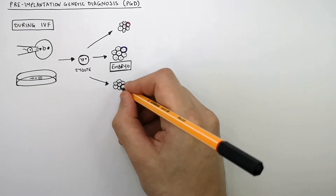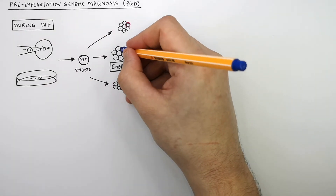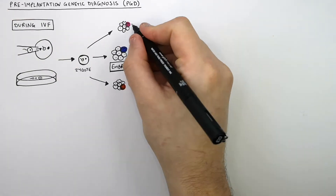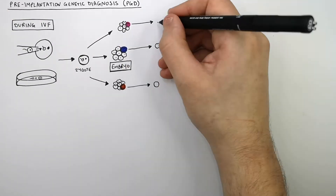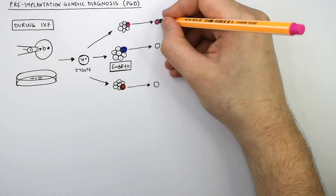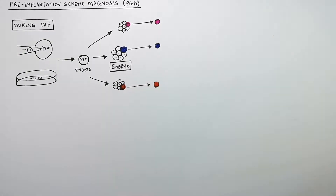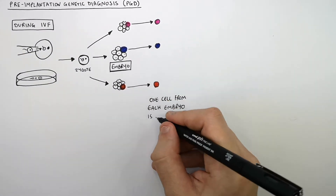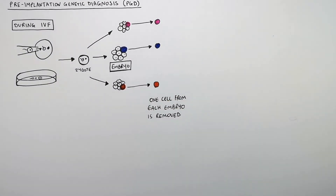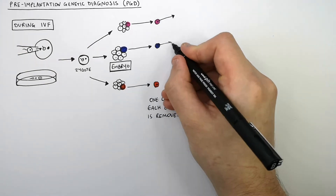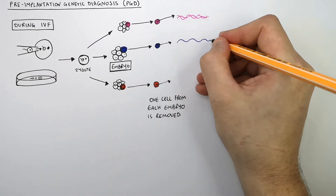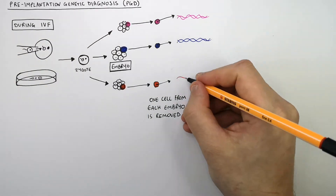So to genetically screen each embryo, they remove one cell from each embryo. They will then analyze the genome of each cell for the relevant gene.